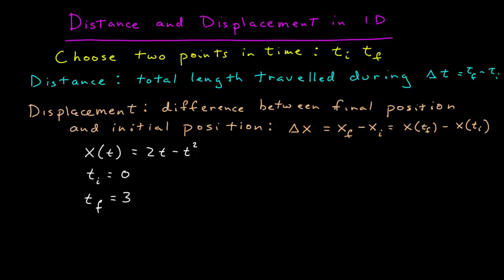Both of these ideas depend or assume two specific points in time, which I call the initial time and the final time. Once you've chosen two points in time, you can define the distance, which is the total length traveled during that time interval, the final time minus the initial time.